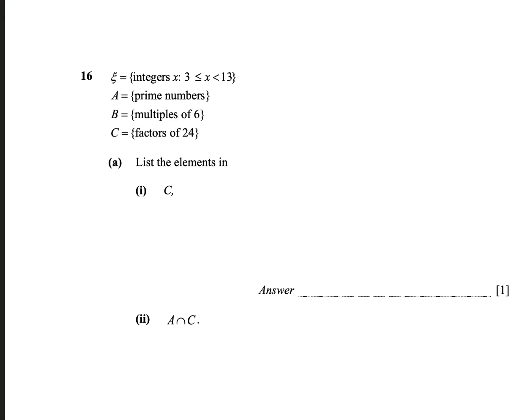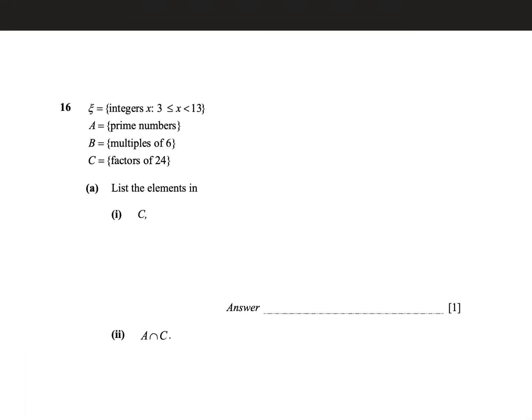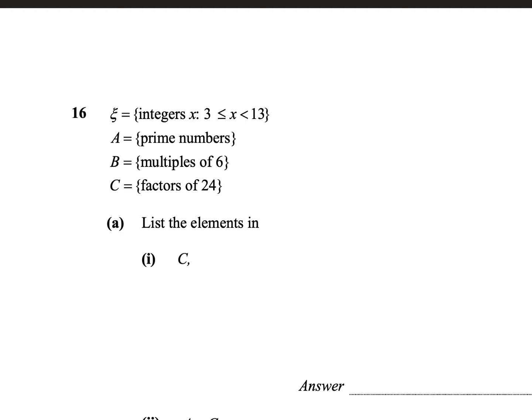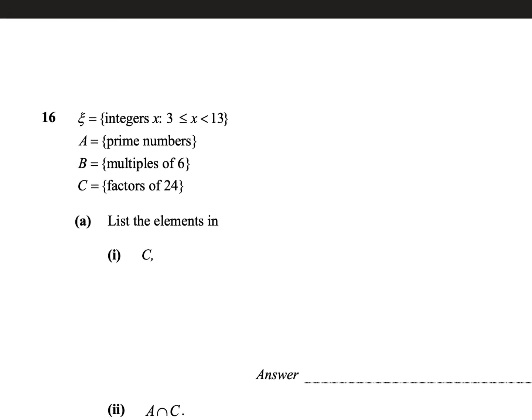So let's just write down each one clearly. In the universal set, zai equals to integers where it's between 3 and 13. So we include, this is or equal to, right? So we include 3, and it's all integers.